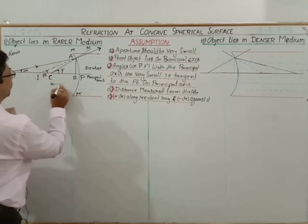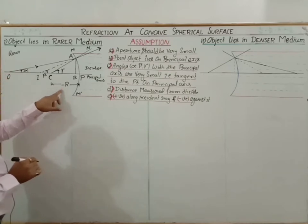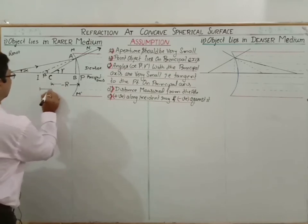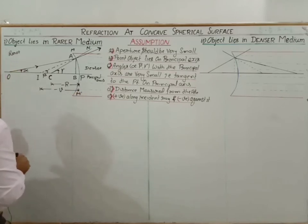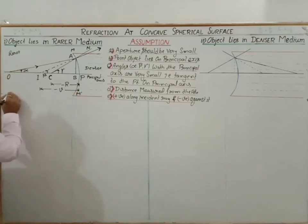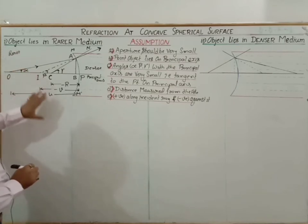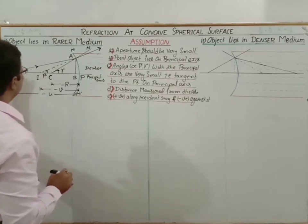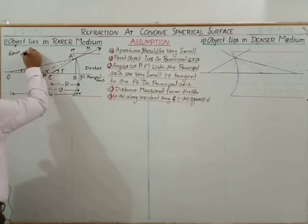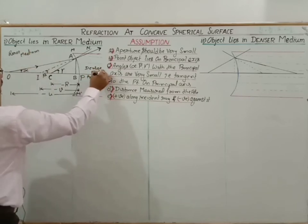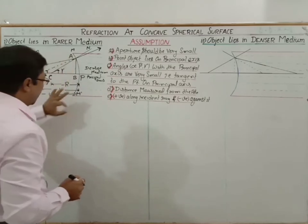Using sign convention: the center of curvature distance is minus r (against the incident ray direction). The image distance is i = minus v. The object distance is minus u. So sign convention gives us: PO = minus u, PI = minus v, PC = minus r. The object is in the rarer medium with refractive index mu1, and the denser medium has refractive index mu2.